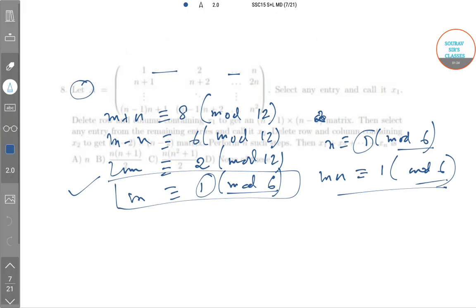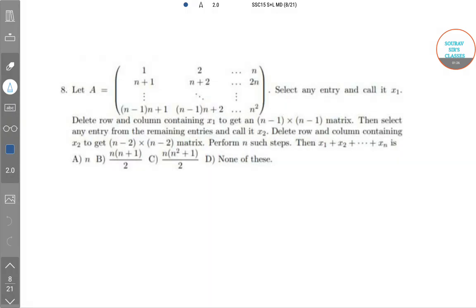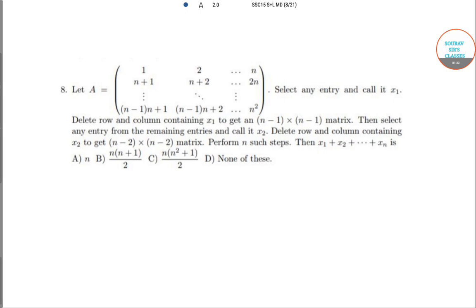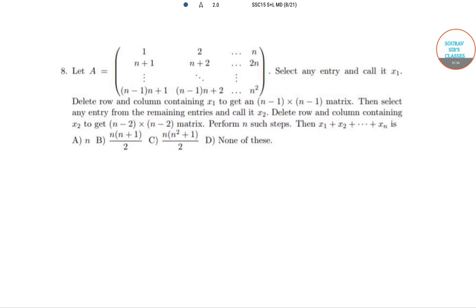The next question is on a determinant-based structure. We can see some rows and columns here. The process is: select any entry and call it x₁ to get an (n-1)×(n-1) matrix. Then select any entry from the remaining entries, call it x₂, and delete the row and column containing x₂ to get (n-2)×(n-2). There's a pattern they've given. Let's start from n=4.